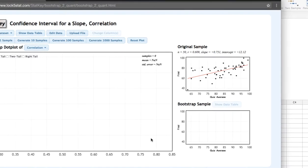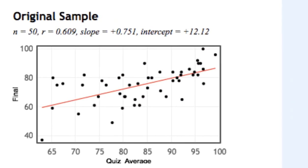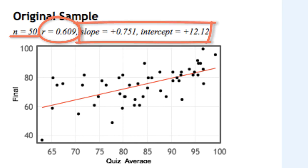On the right side, we have our original sample. Our sample size is n equals 50. StatKey has computed our sample correlation to be 0.609. It's also computed the slope and intercept that we could use if we were interested in running a regression model. In this case, however, we're interested in the correlation between these two quantitative variables.